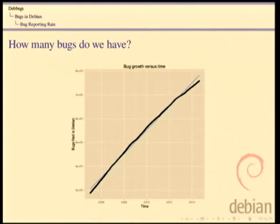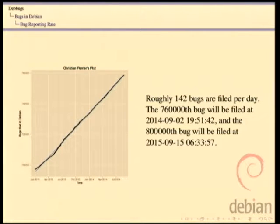This is how many bugs we've got versus time. Our bug growth is roughly linear over time — actually decreasing slightly, but we have a huge number of bugs. Christian Perrier does a fun contest of guessing when particular bugs will be filed. The 760,000th bug will be filed around September 2nd, and the 800,000th bug around September 15th next year, assuming the linear progression maintains. We average roughly 142 bugs filed a day.